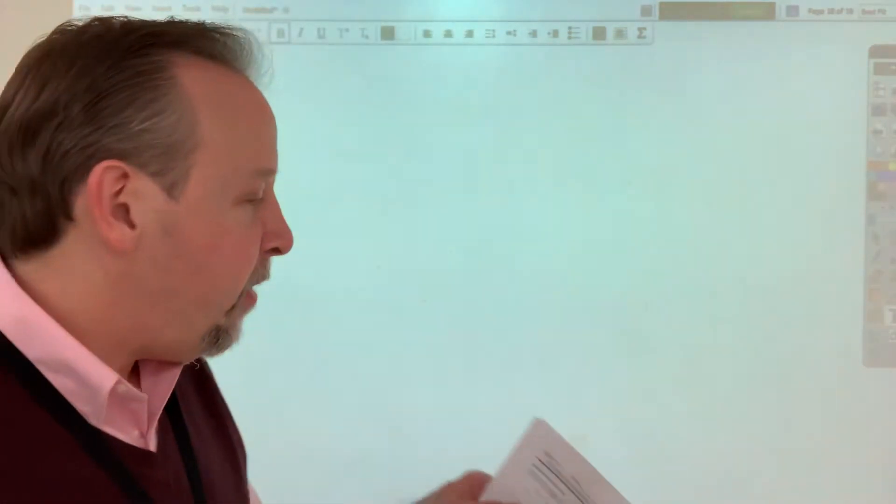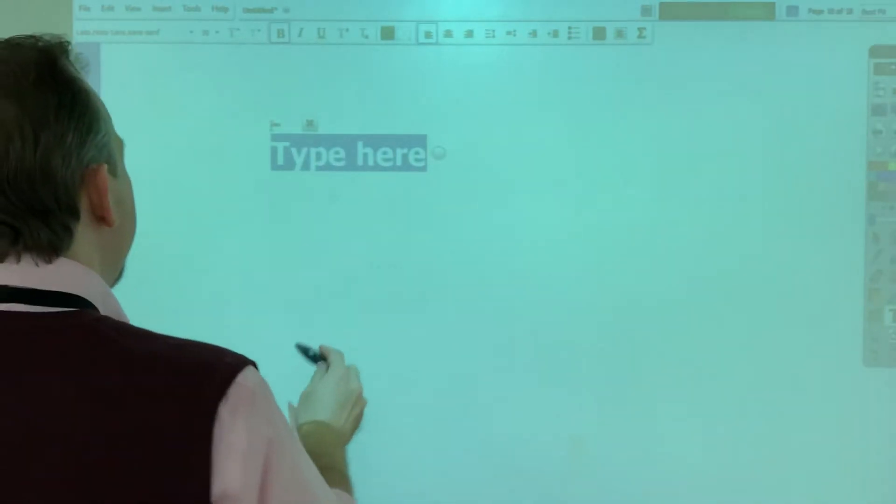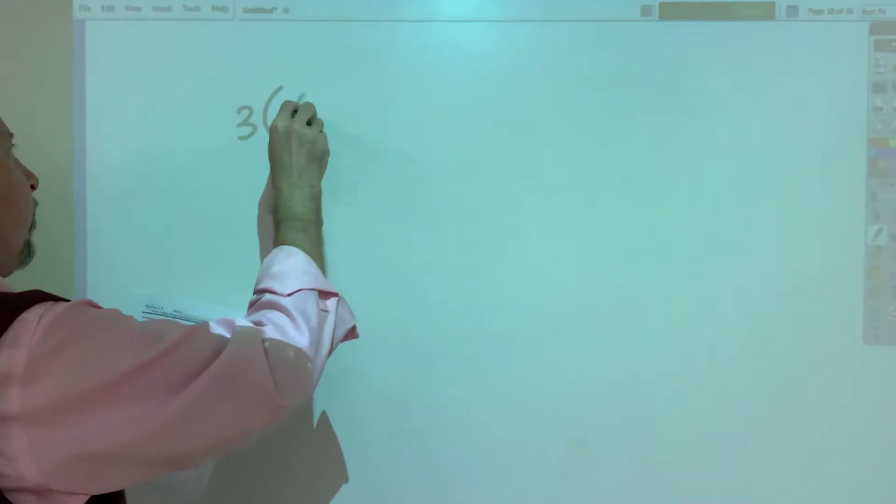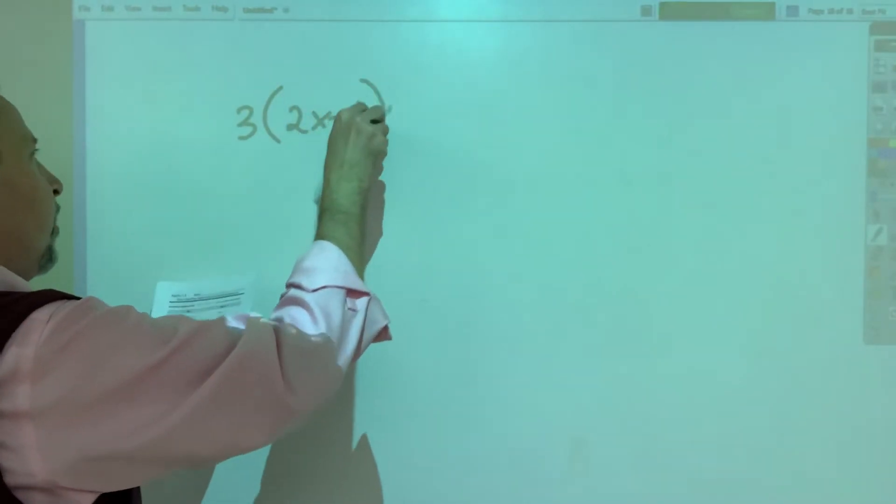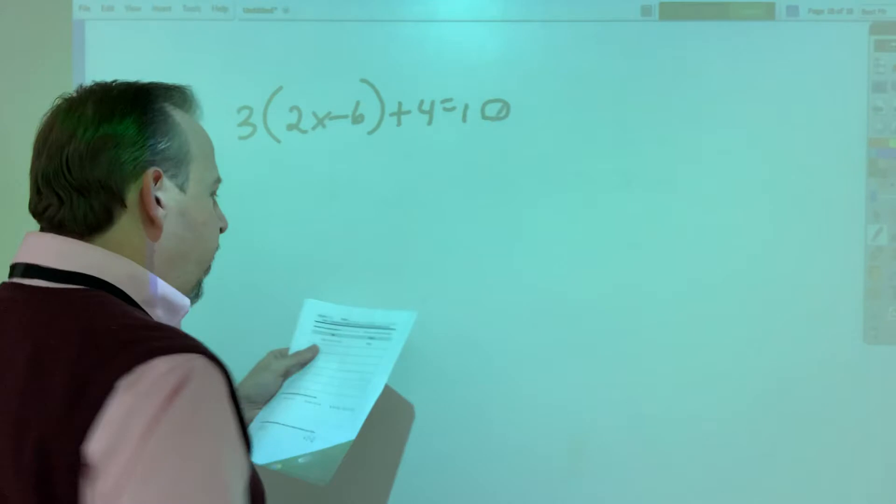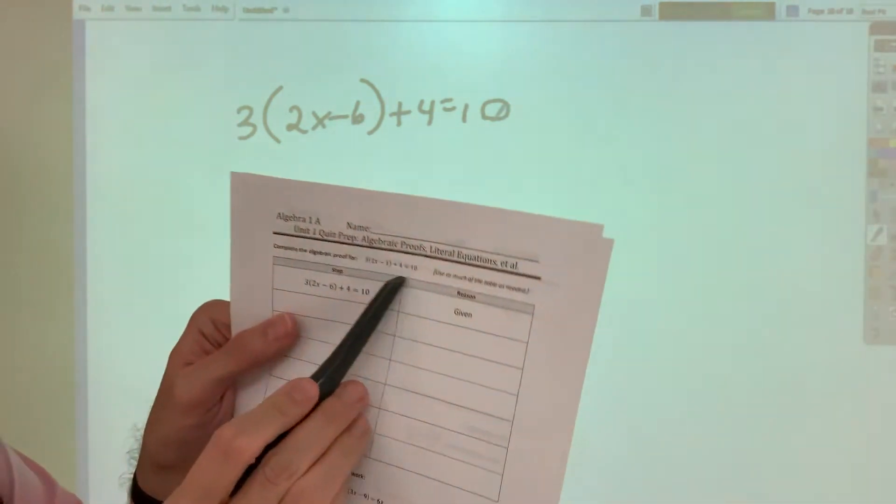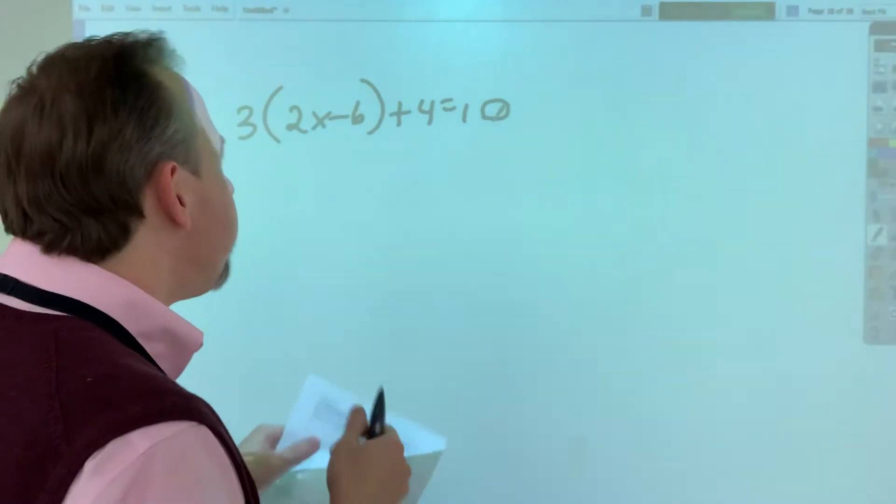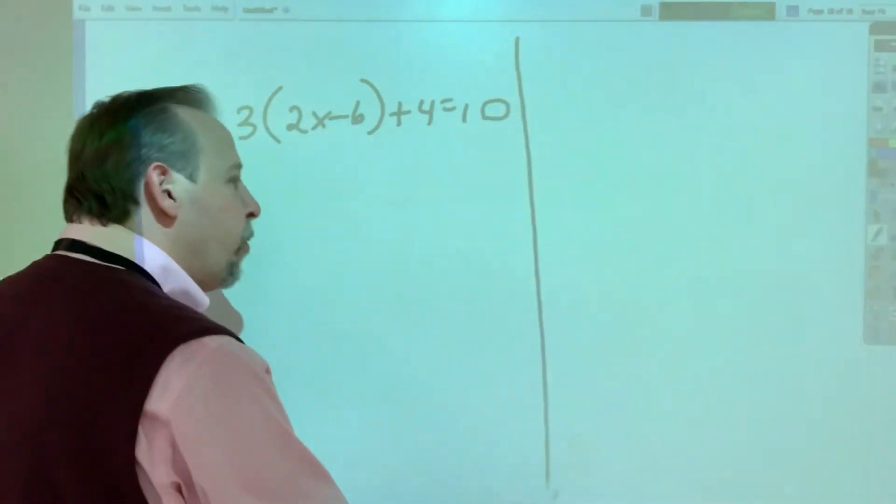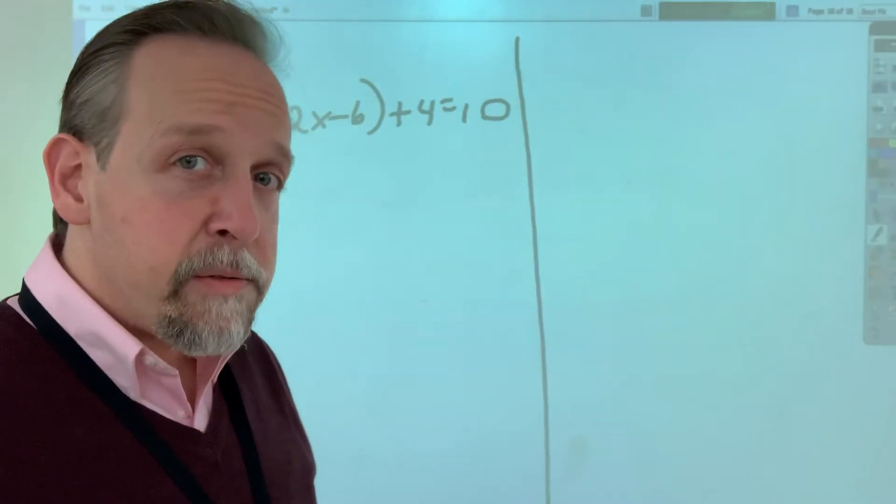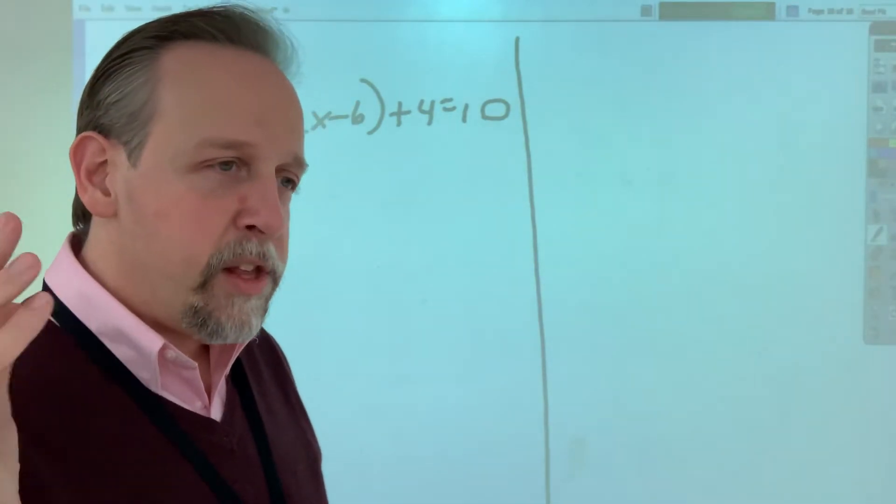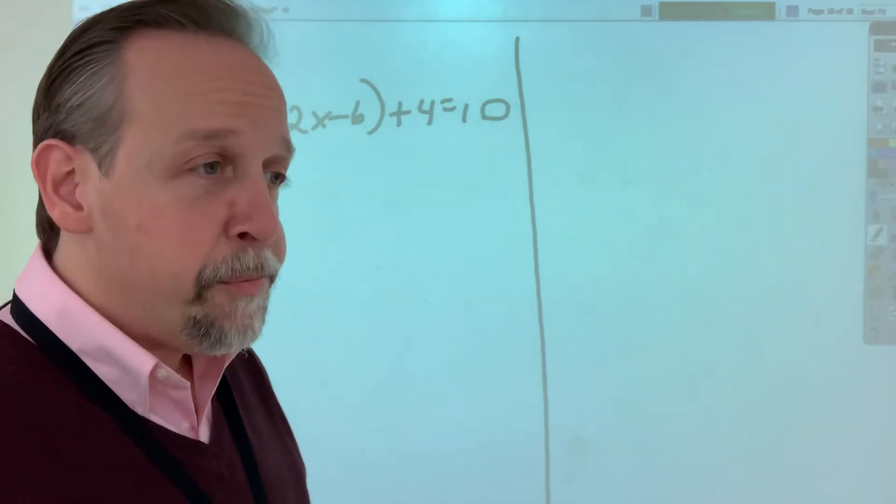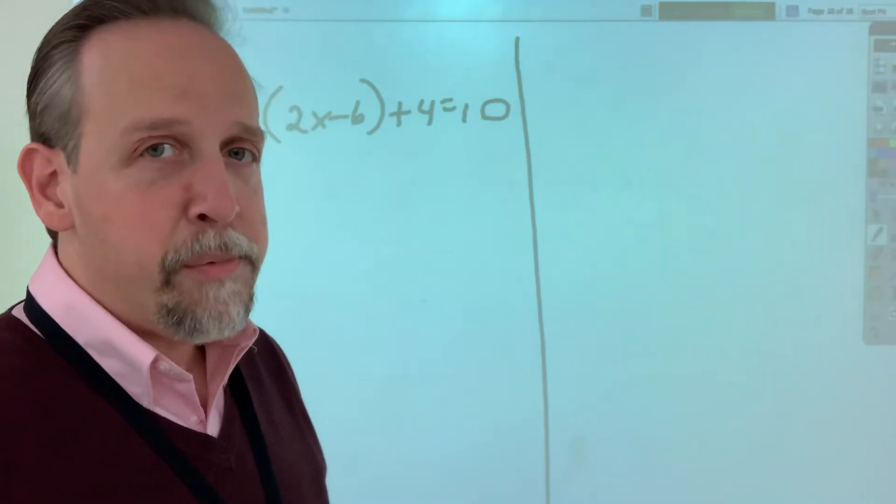So the first problem gave you the question 3 parentheses 2x minus 6 plus 4 equals 10. So the thing was you had to tell me what to do but also the reason behind it. Don't forget the six reasons we have that allow us to do everything we're doing. They are the properties of equality, which are addition, subtraction, multiplication, or division, as well as combined like terms and the distributive property.